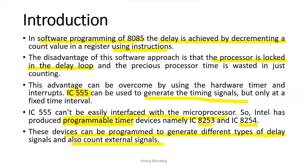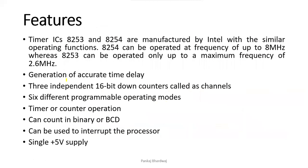The internal architecture and diagram of the 8253 and 8254 are exactly the same. The only difference between the two ICs is the operating frequency. The 8253 can operate up to a maximum of 2.6 MHz, while the 8254 can operate up to a maximum of 8 MHz. Everything else is the same, and both ICs are used to generate accurate time delays.